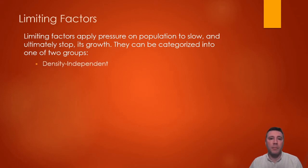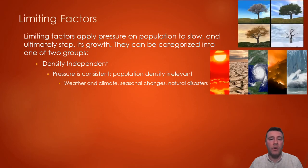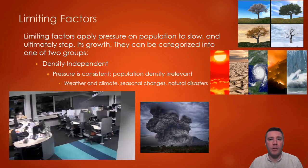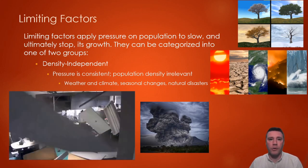The first is density-independent limiting factors, and these are ones that apply consistent pressure on a population to slow its growth. A population's size or density does not influence the ability of a density-independent factor to stop or slow growth. Examples include weather patterns, climate, and seasonal changes. For example, the density of a white-tailed deer population does not influence whether or not a drought occurs or how severe it is, nor does it play a part in the changes in carrying capacity brought about by cyclical seasonal changes from spring to summer to fall to winter. Natural disasters such as earthquakes and volcanic eruptions are the result of plate tectonics and geologic processes, having nothing to do with how many orca, Douglas fir trees, or ladybugs there are.